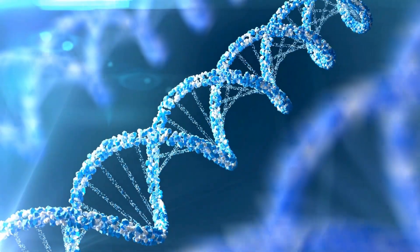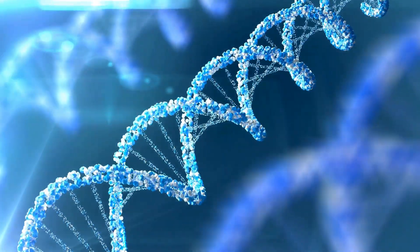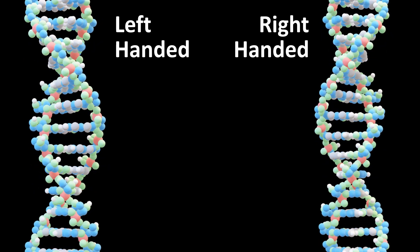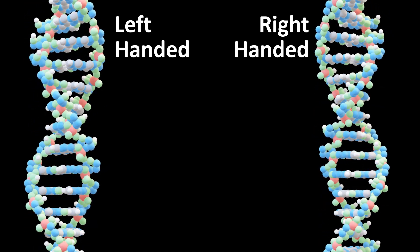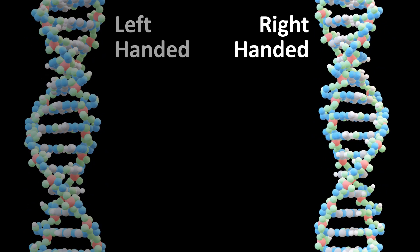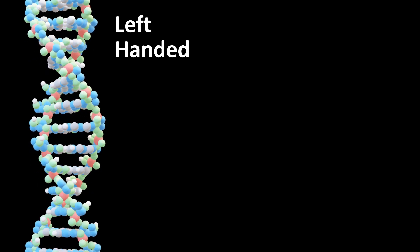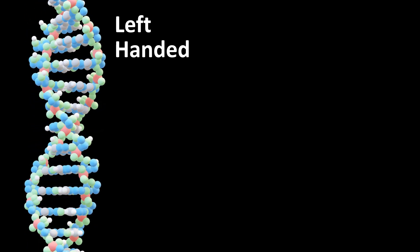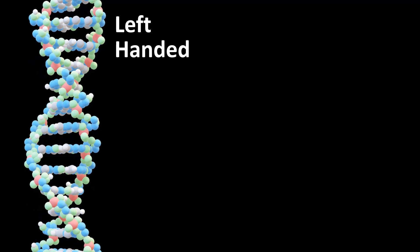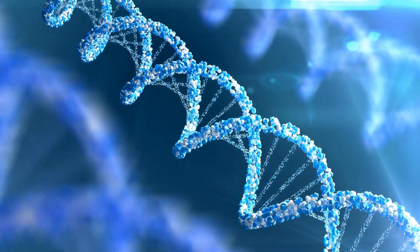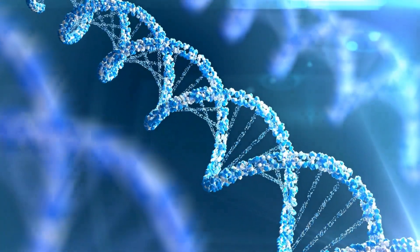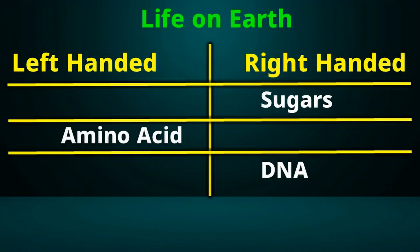The instructions for how proteins are made from amino acids are stored in DNA. DNA also has left-handed and right-handed forms. However, all DNA found in living organisms on earth is right-handed. There is no known organism that uses left-handed DNA as its genetic material. Although left-handed DNA can occur transiently in some organisms, it is only a temporary phenomenon during which the DNA does not carry out any normal functions. This means that all living organisms on earth use right-handed sugars, left-handed amino acids, and right-handed DNA.